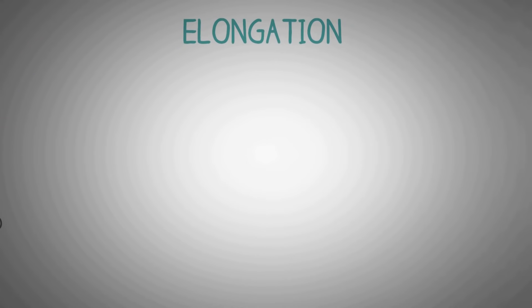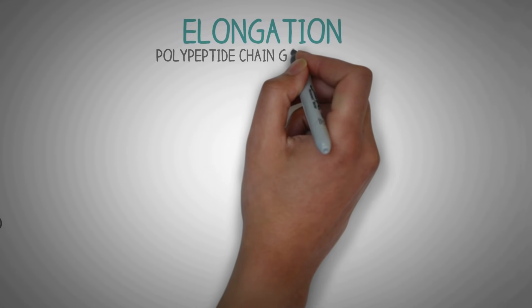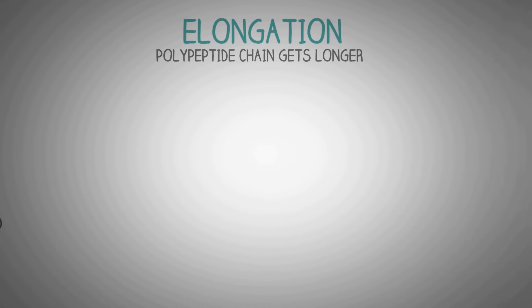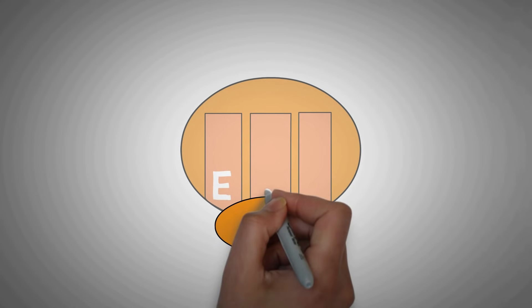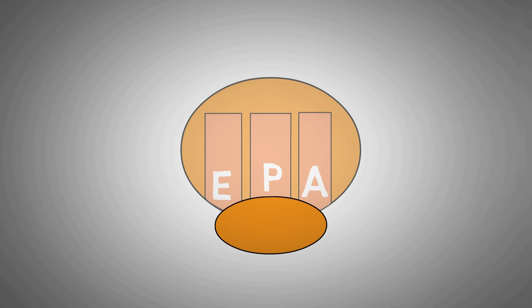The next step in the process is elongation. Elongation is when the polypeptide chain gets longer. In the larger subunit of ribosome, we have three slots or sites which are named as E, P and A.